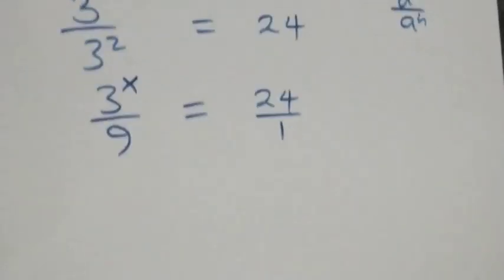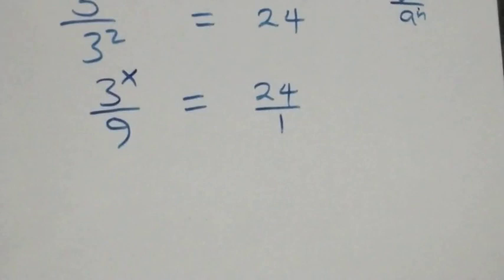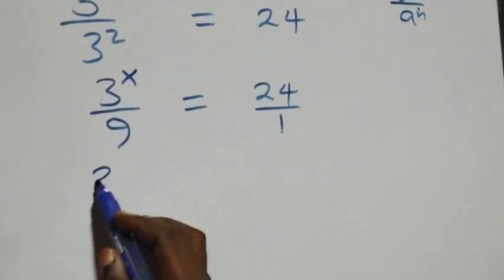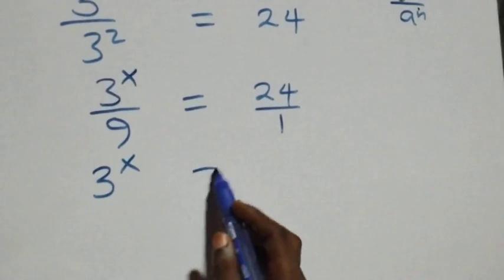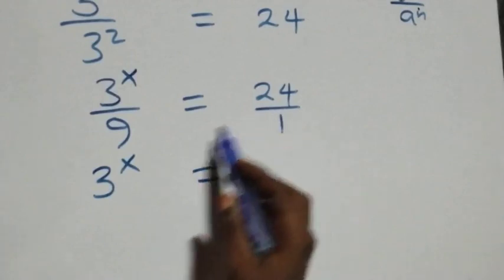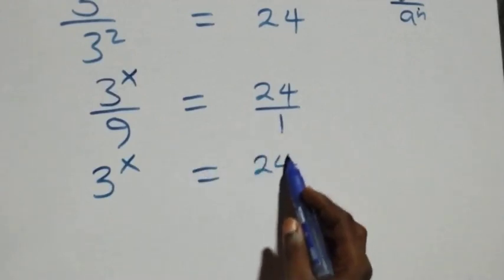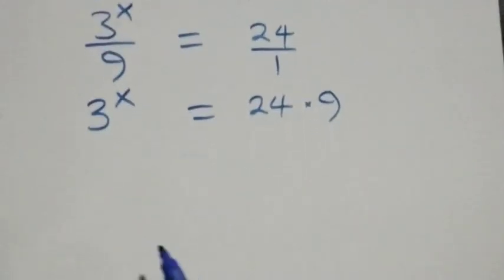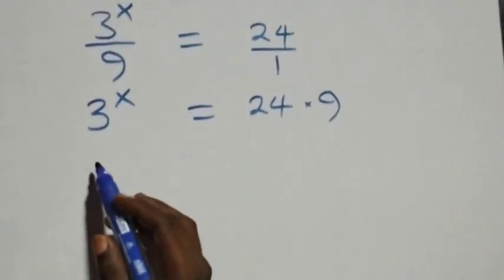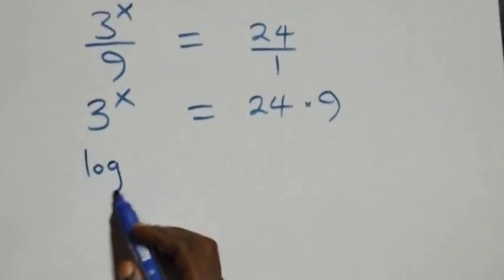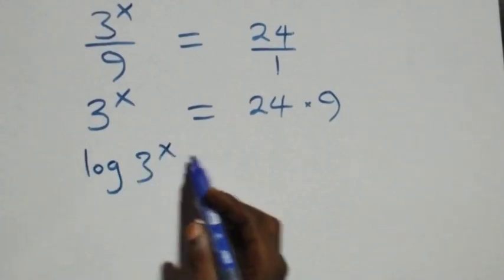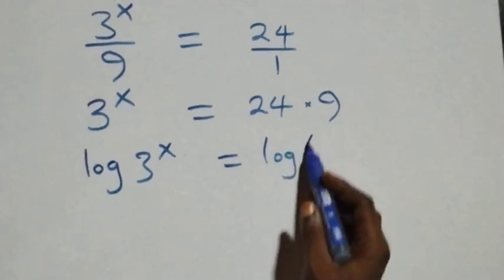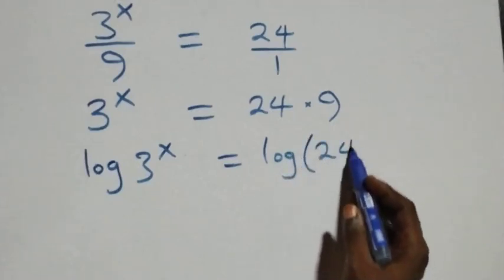At this next step we cross multiply: three raised to power x times one, which is the same as three raised to power x, equals twenty-four times nine. Then we take the log on both sides and we have log three raised to power x equals log twenty-four times nine.